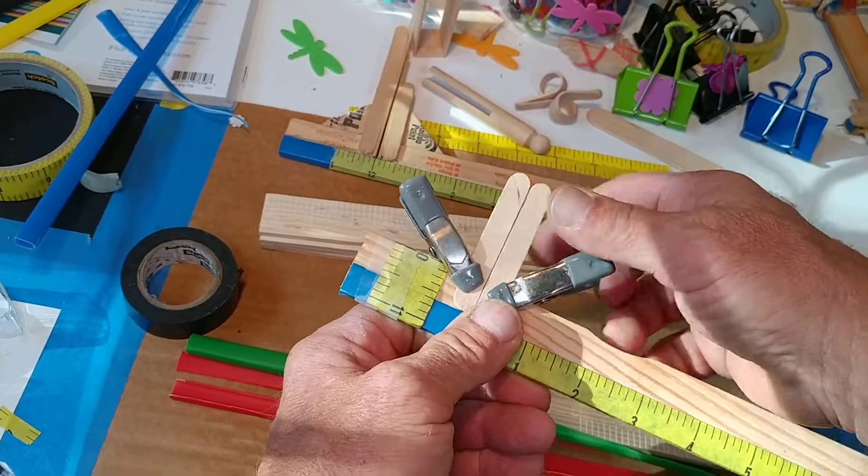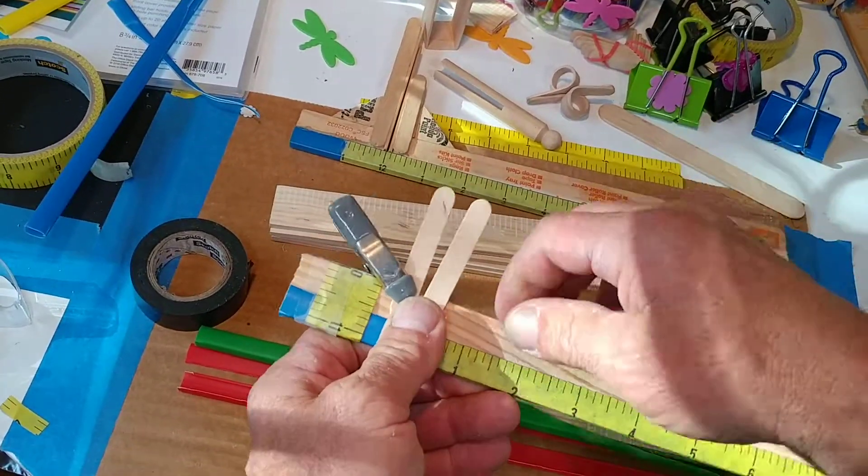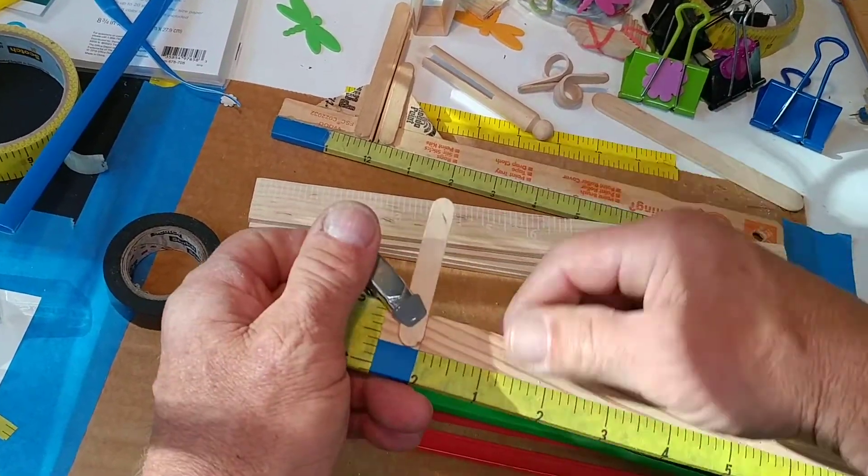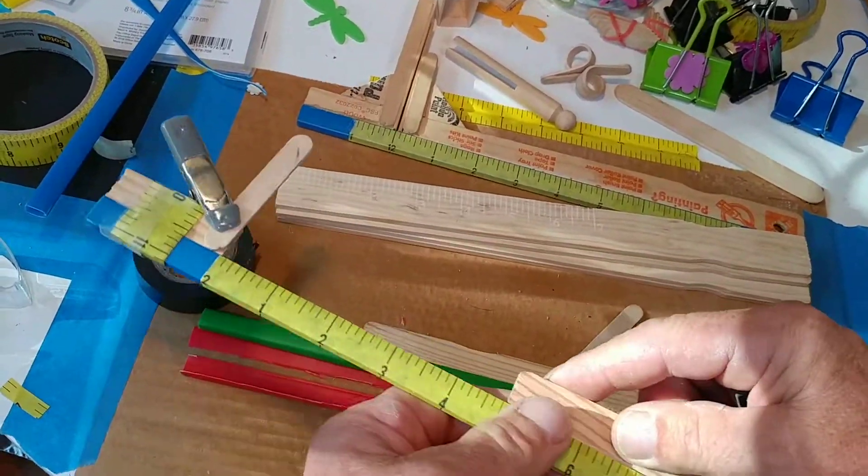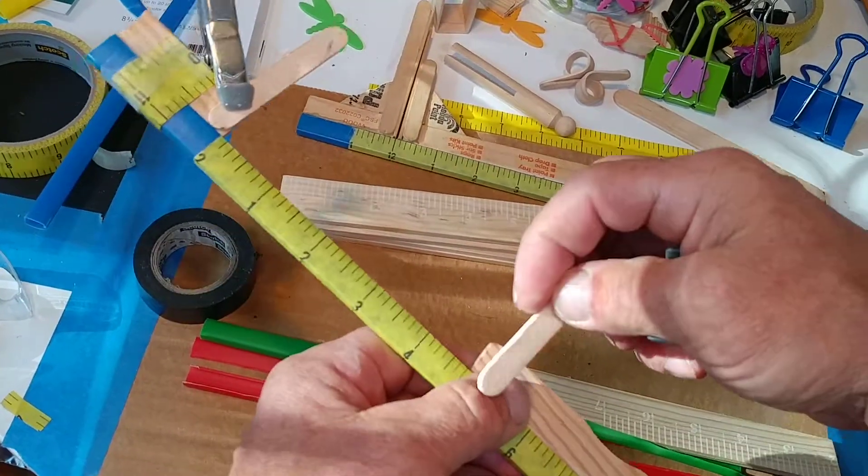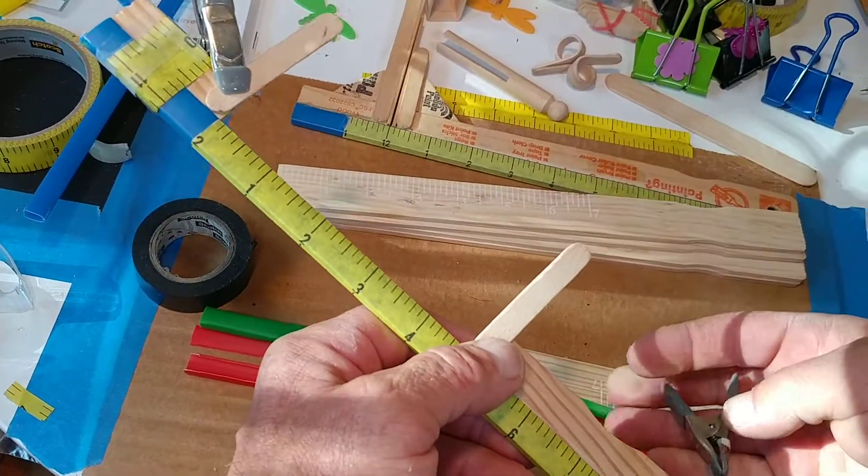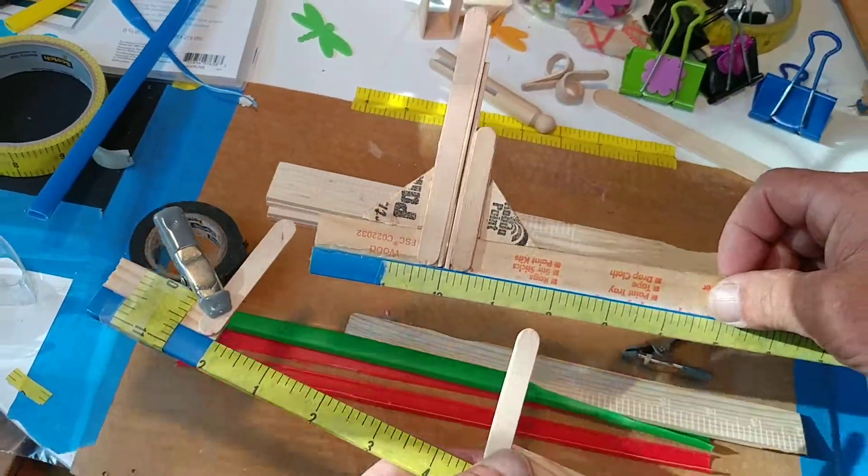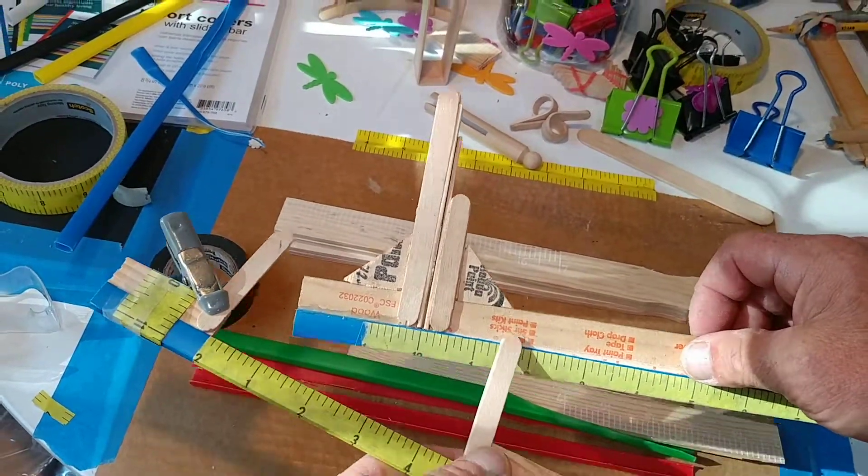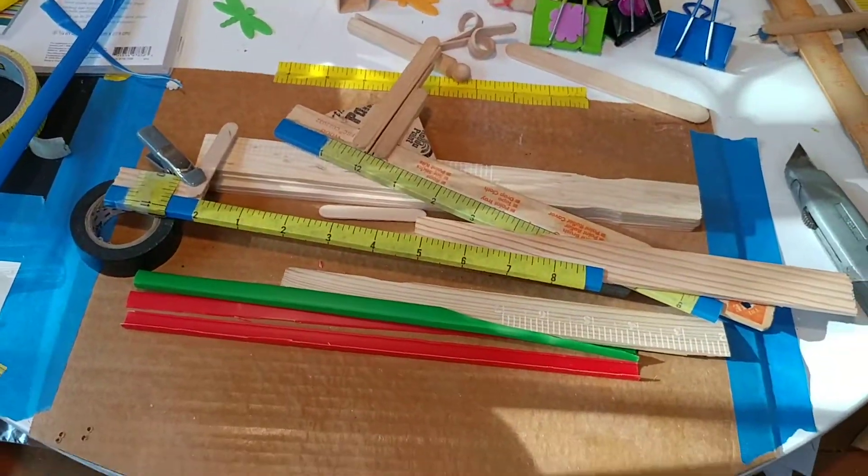If you want to add length to the caliper, glue on some short popsicle sticks or glue on some long sticks. This was a combination. I appreciate your patience in all this.